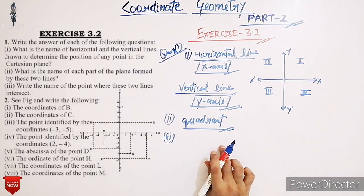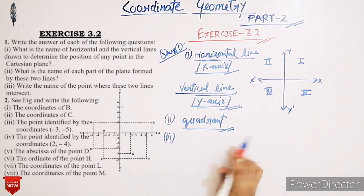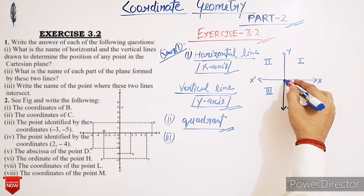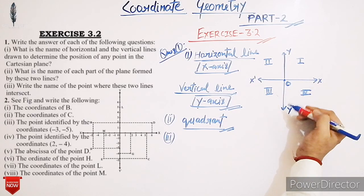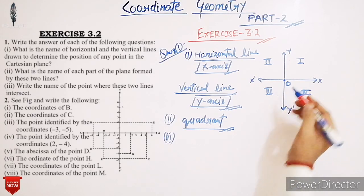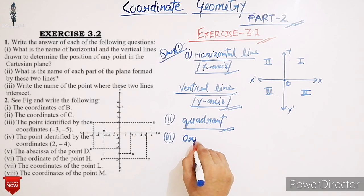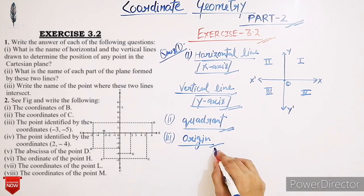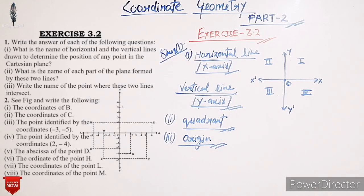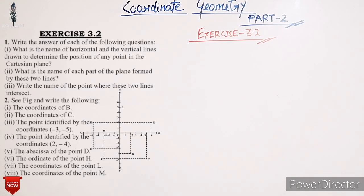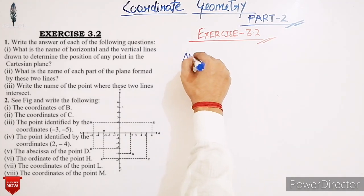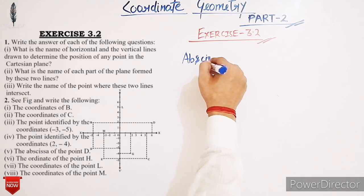Now next: write the name of the point where these two lines intersect. Students, the point where the x-axis and y-axis intersect is denoted by O and it is called the origin. Before starting question number two, we have to revise some points.